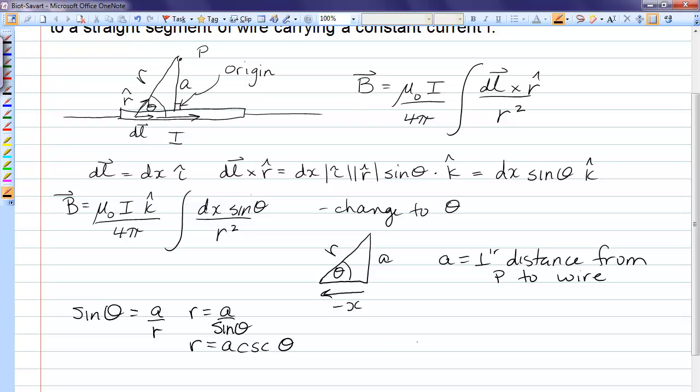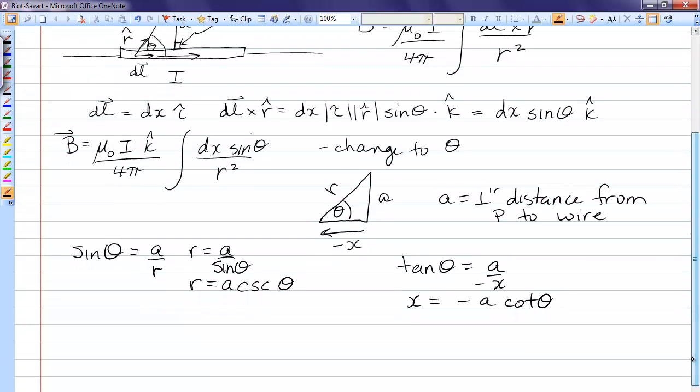And to get rid of x I'm going to use tan theta. So I have tan theta is a over negative x or x is negative a cotangent theta. But I need dx. So I'm going to take the derivative. dx is negative a derivative of cotangent is negative cosecant squared theta dθ. So the negatives are gone and I just have a cosecant squared theta dθ.